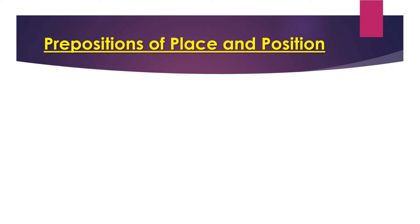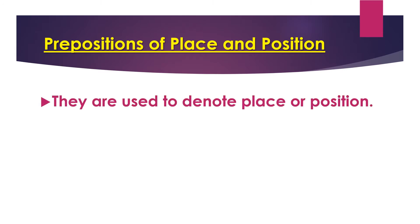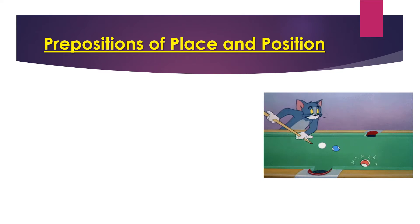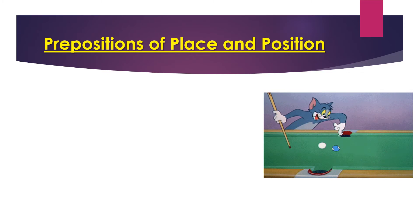Prepositions of place or position are used to denote the place or position of a noun or a pronoun and help link them with the rest of the sentence. Examples include: in, on, at, up, top, under, down, below, behind, in front of, etc. All these prepositions help us to pinpoint the place or position of a noun or a pronoun. For example, 'my pen is in my bag' — the preposition 'in' pinpoints the position of my pen.